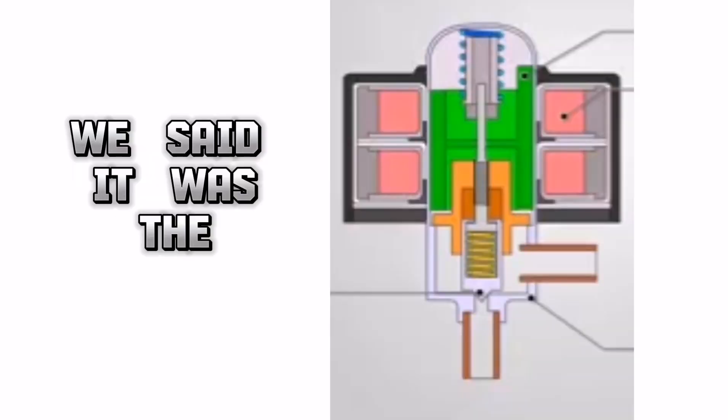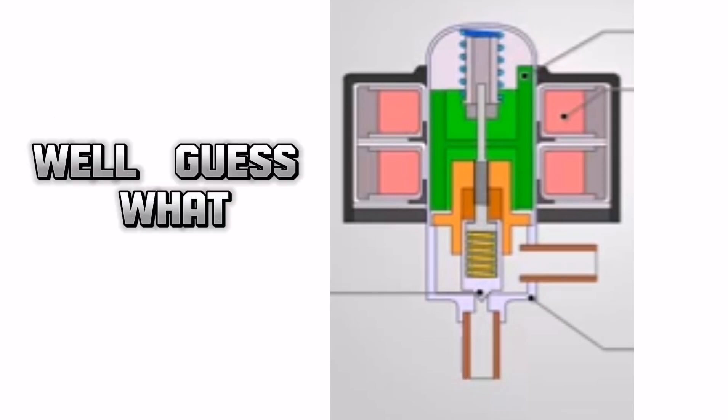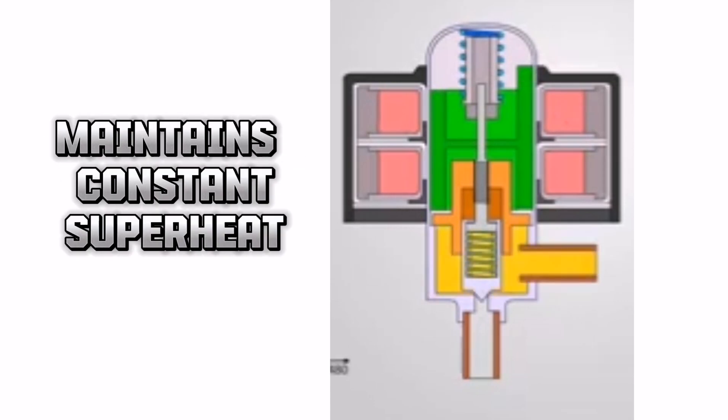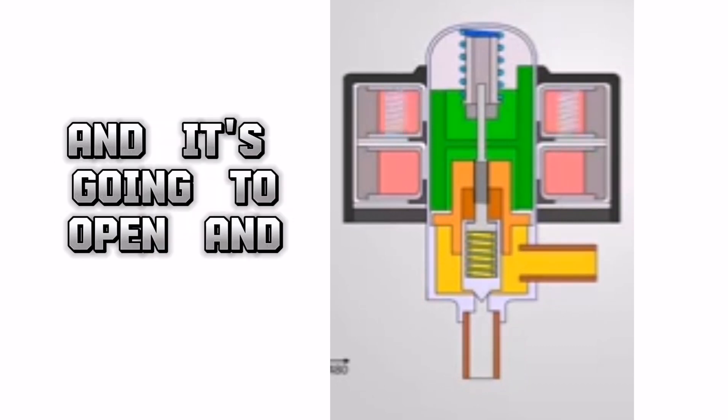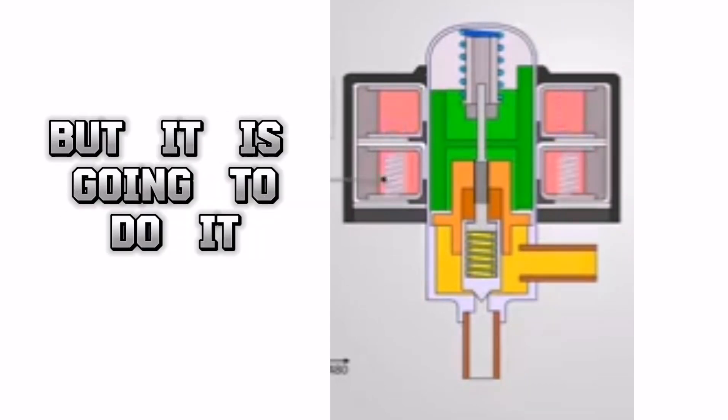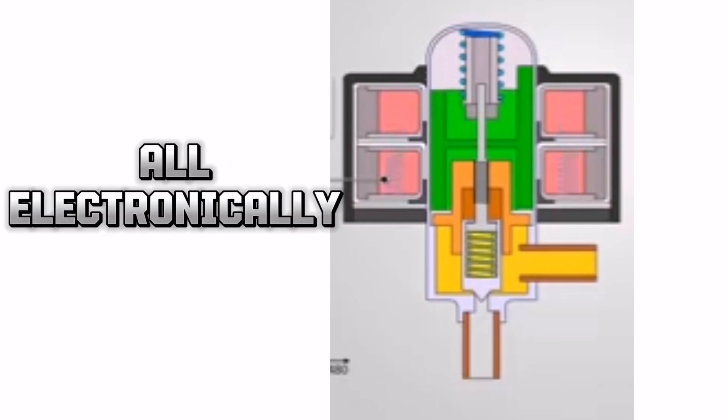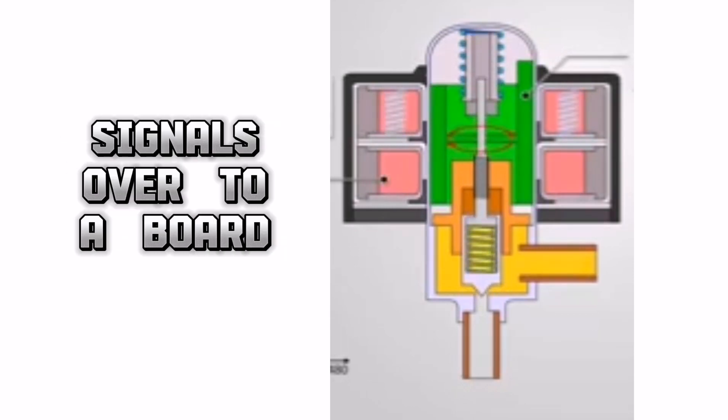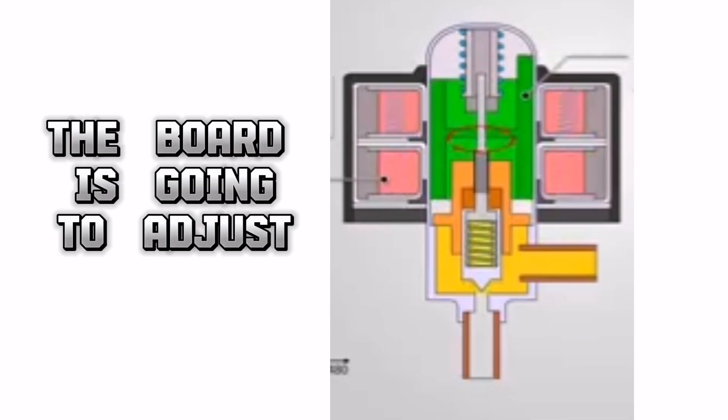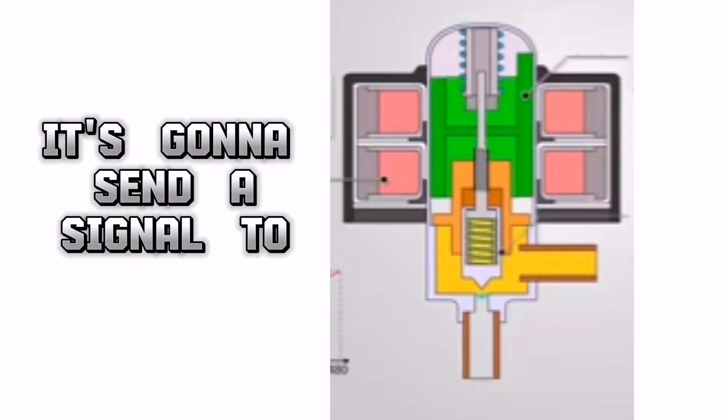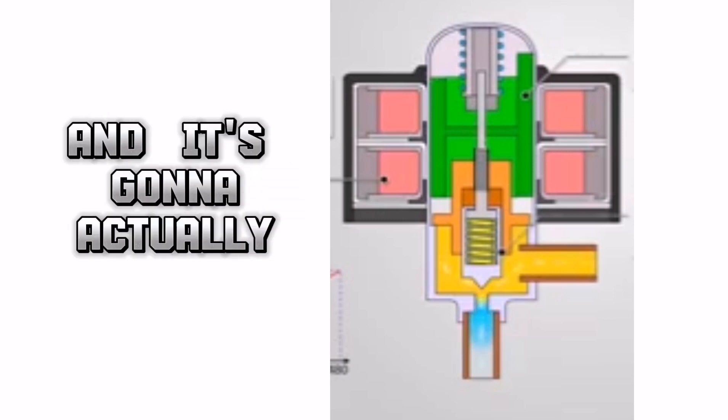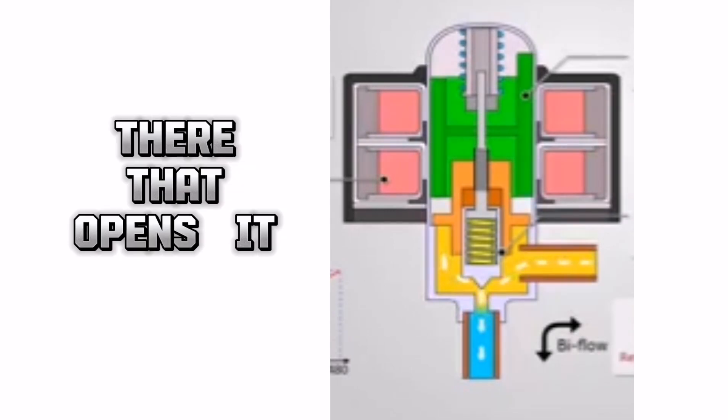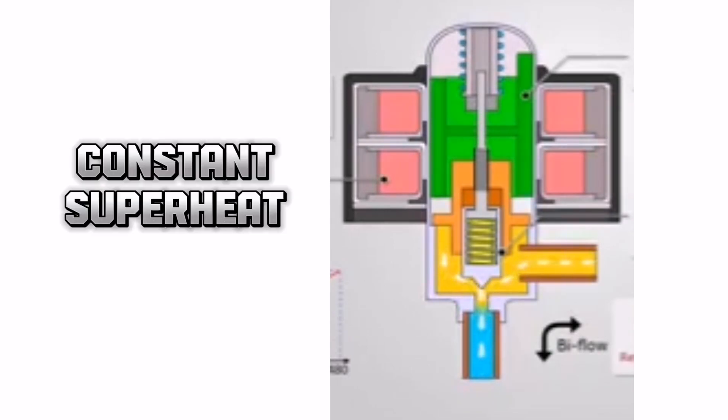Another one, we said it was the electronic expansion valve. Well, guess what? That's going to do basically the same thing. Maintains constant superheat. And it's going to open and close. And it's going to adjust. But it is going to do it all electronically. It's going to have to have sensors. Electrical sensors that are going to send the signals over to a board. The board is going to adjust. It's going to send a signal to the valve. And it's going to actually open and close the valve electronically. It's got a little motor in there that opens it. All of that to maintain constant superheat.